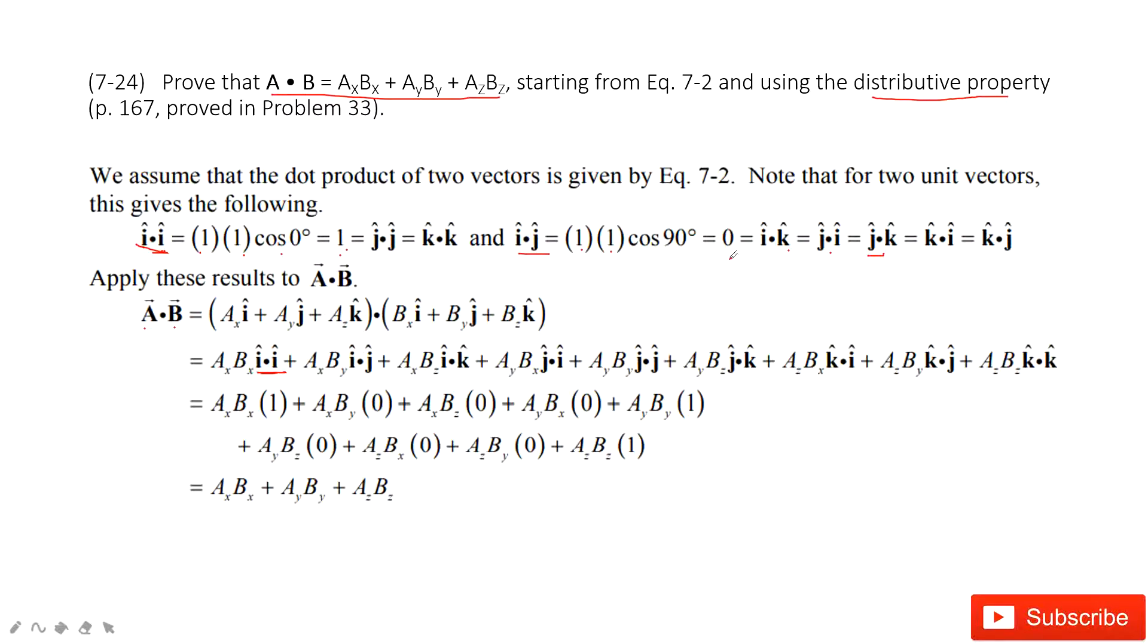And then we input this inside. We can see, the only surviving terms are i·i, j·j, and k·k. The other terms are just zero. And then these three terms are just ax·bx, ay·by, az·bz.